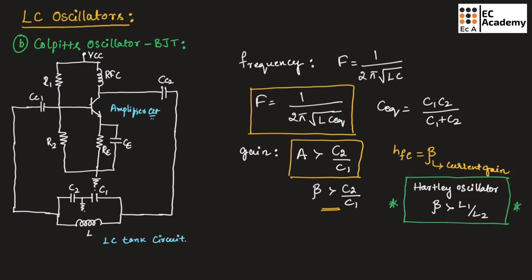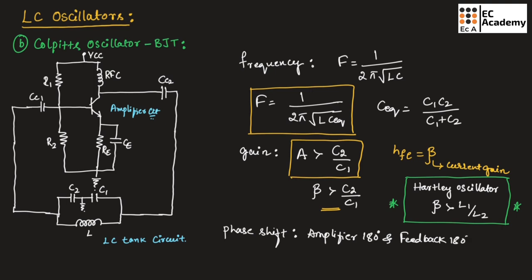Now let us see the phase shift. The amplifier circuit will produce a 180-degree phase shift and the feedback circuit or tank circuit will produce a 180-degree phase shift. So the overall phase shift will be 360° or 0°. This is the working of the Colpitts oscillator. This concludes LC oscillators. Hope you have understood the topic. Thank you.